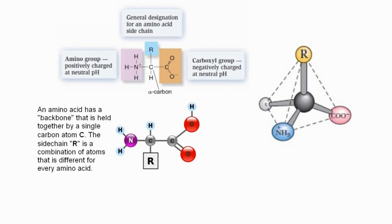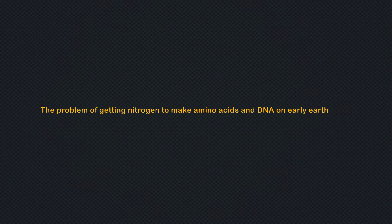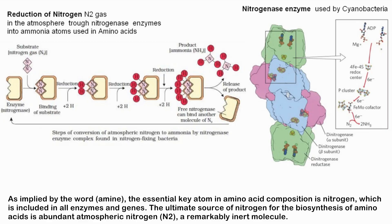An amino acid has a backbone held together by a single carbon atom. The side chain is a combination of atoms that is different for every amino acid. The problem of getting nitrogen to make amino acids and DNA on early Earth is fundamental: as implied by the word 'amine,' the essential key atom in amino acid composition is nitrogen.